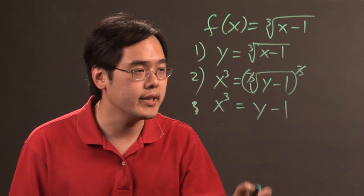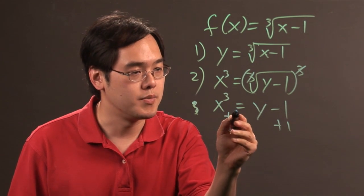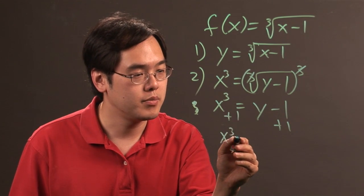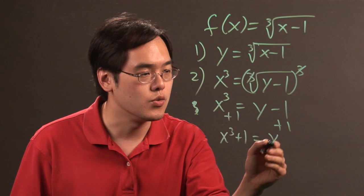Then to solve for y completely, you add 1 to both sides. You have x cubed plus 1 equals y.